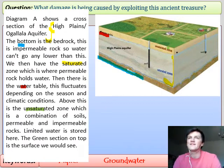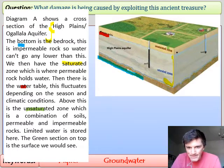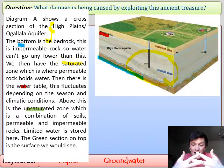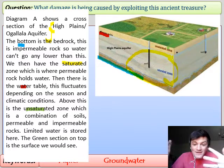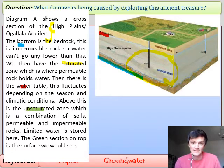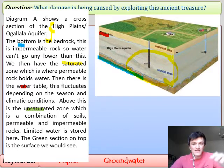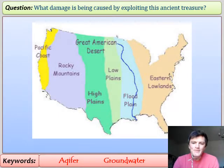The unsaturated zone is a combination of soils and permeable and impermeable rocks — limited water is stored here; that's what you see at the surface when you look out the window. The yellow saturated zone is what we refer to as the aquifer — permeable rock with gaps that over time water fills. And when we talk about time, we're talking millions of years. It doesn't just fill up overnight; it takes millions of years to gradually fill.